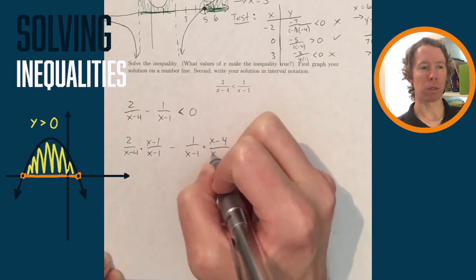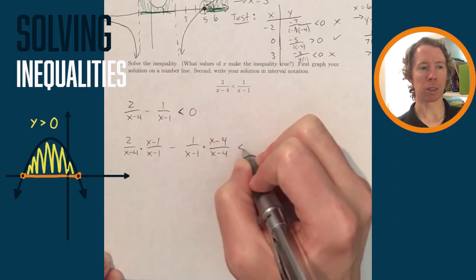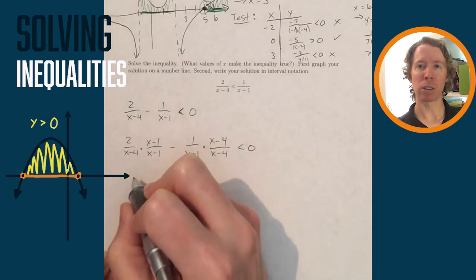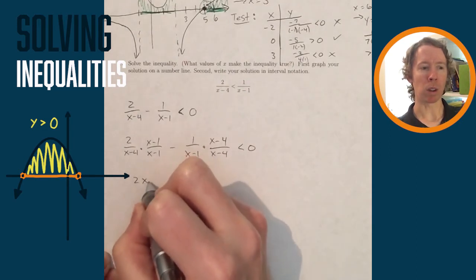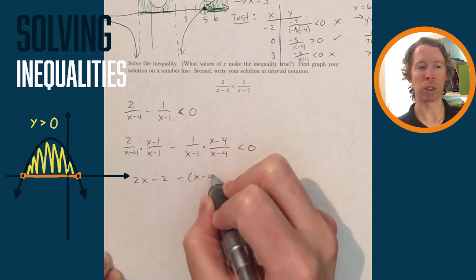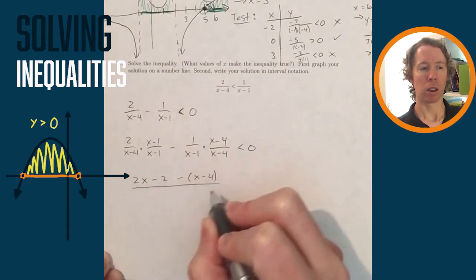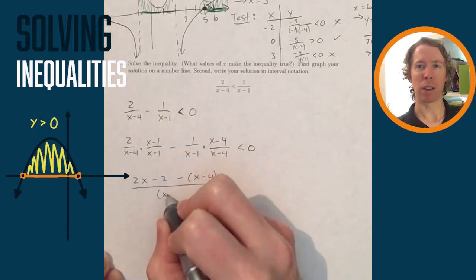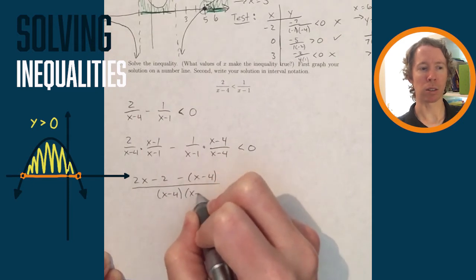First, I'm going to move the fractions both on the same side so that I can combine the fractions. And then once I combine the fractions, what I've got is a rational inequality where I can graph the left-hand side or the rational side.